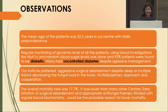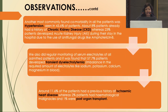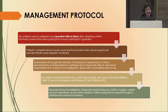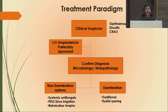Regular monitoring was done for diabetes, and aggressive surgical debridement was performed. Other common comorbidities included hypertension, chronic kidney disease, transient electrolyte disturbances, and ischemic heart disease. Post-organ transplant patients were also seen. About 66% of cases had intraorbital extension, and 16% developed CNS involvement, most commonly cavernous sinus thrombosis. Patients were investigated promptly, FES done where needed, and liposomal amphotericin B administered at 5–10 mg/kg/day with a cumulative dose of 3 grams.